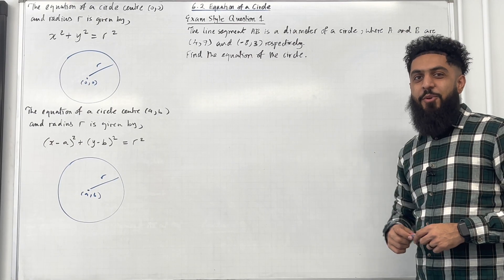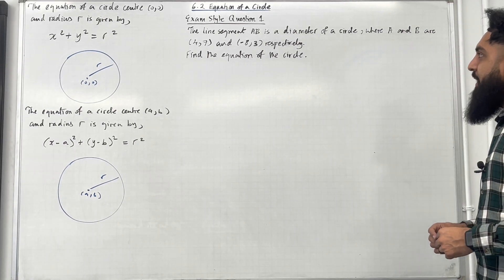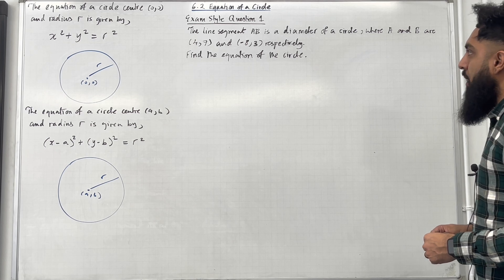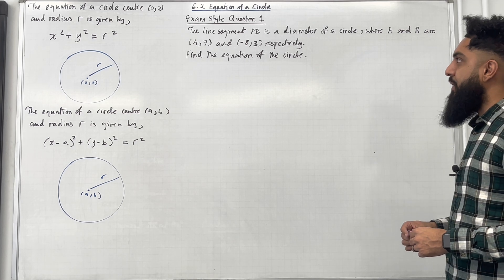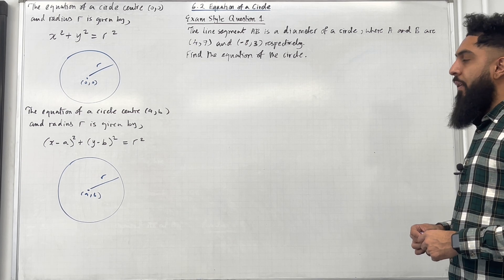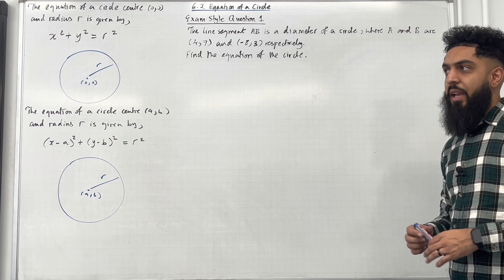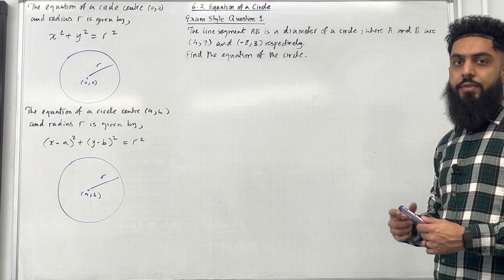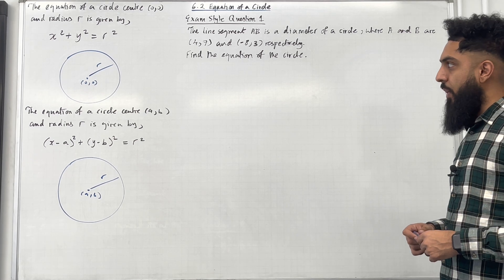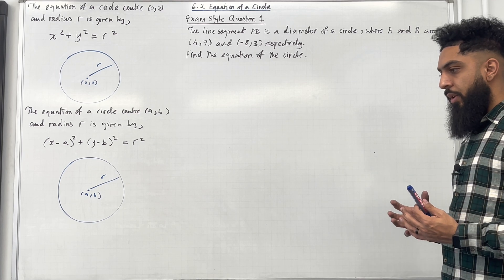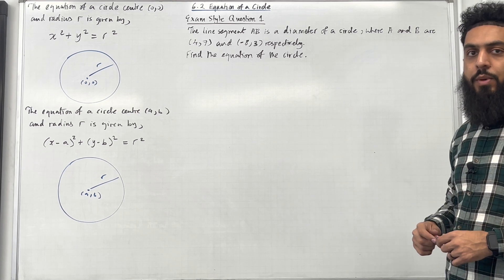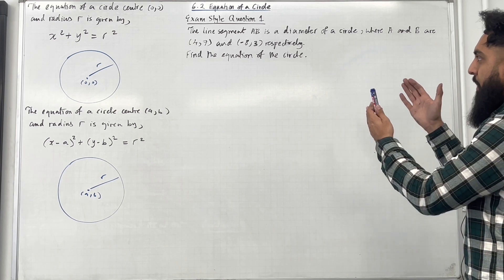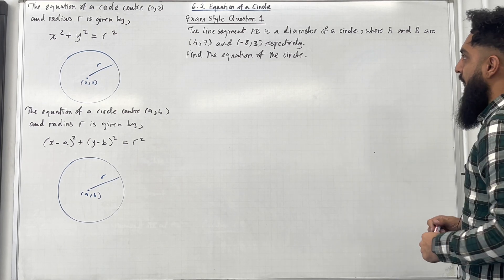Here is exam style question 1. The line segment AB is a diameter of a circle where A and B are (4, 7) and (-8, 3) respectively. Find the equation of the circle. In the exam, whenever you get questions about circles, it is very useful to draw a diagram. Once you've got your diagram drawn, it becomes so much easier to proceed with the solution.